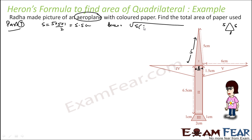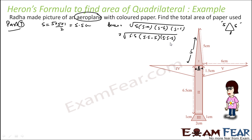The area is root of s(s−a)(s−b)(s−c). So s is 5.5, giving us 5.5 minus 5 for the first side, 5.5 minus 5 for the second side, and 5.5 minus 1 for the third side. Solving this, we get 2.488 centimeter square. So we have found the area of part 1.